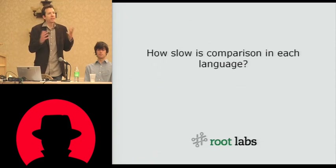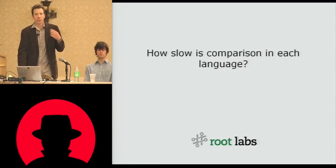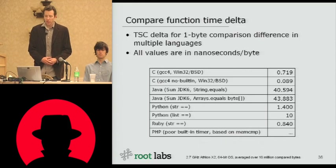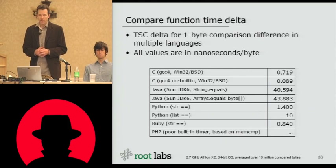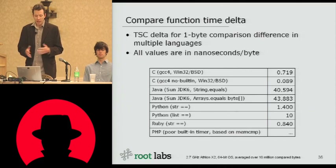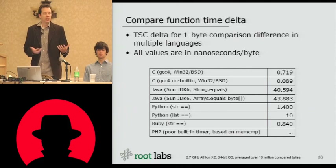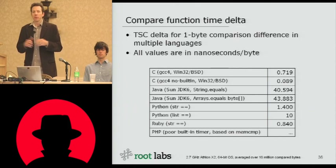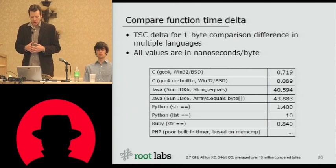So now, having looked at vantage points and what's the minimal distinguishability from different vantage points for a given number of samples, let's look at comparisons in different languages and see how exploitable these are. We took basic CPU tests of a comparison operator in multiple languages and multiple types of comparisons. We generated a TSC delta for a one-byte comparison difference — so one value would be 'A' and the next 'AB', and we would measure how long that took in terms of difference.